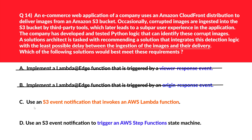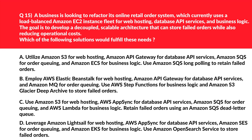Option C: use an S3 event notification that invokes an AWS Lambda function. This is the best solution — it allows the company to integrate Python logic to detect corrupt images immediately after they are ingested into the S3 bucket, minimizing latency between data ingestion and serving. Option D: use an S3 event notification to trigger an AWS Step Functions state machine. While technically possible, it would be overkill, introducing unnecessary complexity and cost — incorrect. We lock option C as the correct answer.